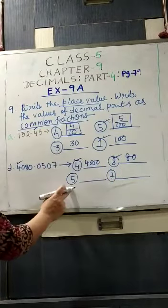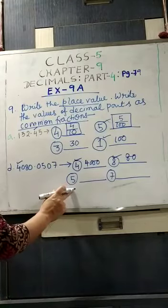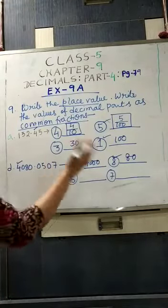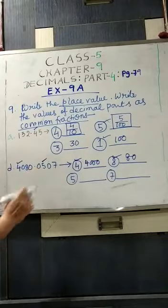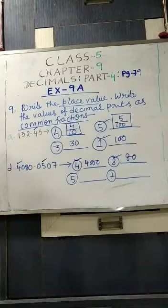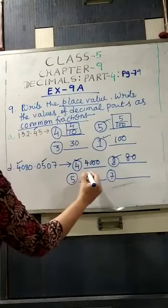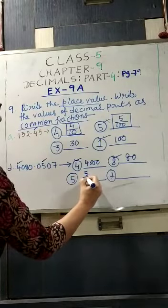Next digit, that is given as 5. Where is 5? 5 is after decimal, in which position? Second position. That means hundredths place. So you will write 5 by 100.